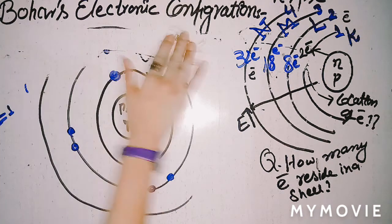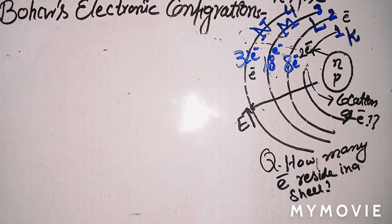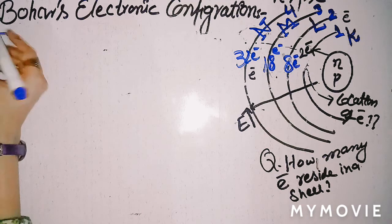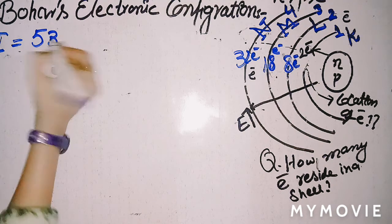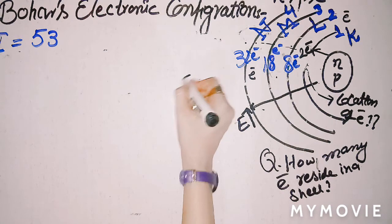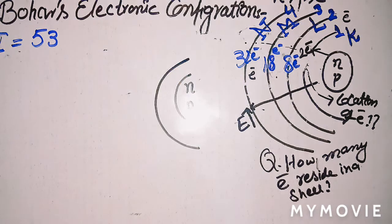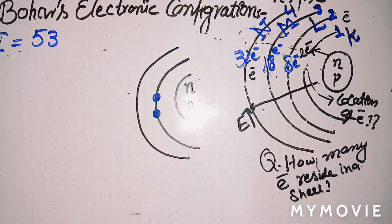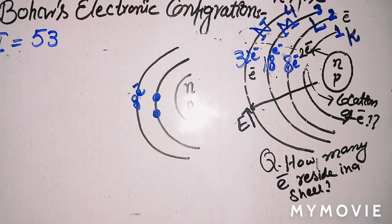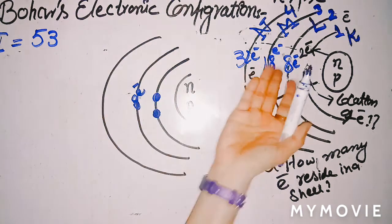Now we resolve another example with an atomic number greater than sodium — iodine, with atomic number 53. You have to distribute 53 electrons. First, place 2 electrons in the K-shell. Then place 8 electrons in the second shell (L-shell). Now, how many electrons go in the third shell? The third shell can hold 18, but we need to check.